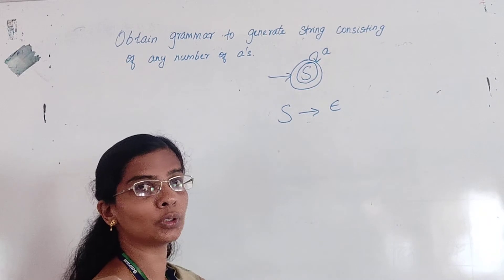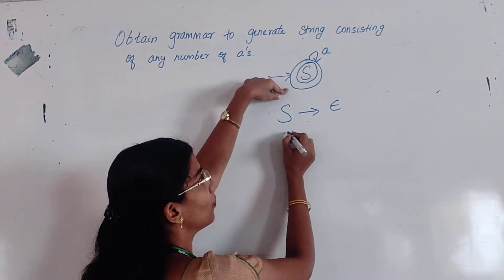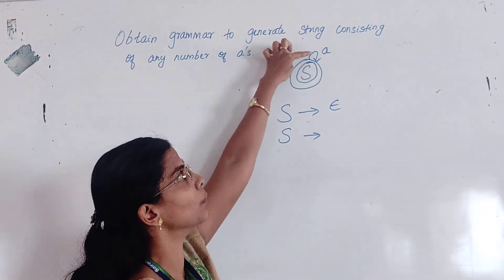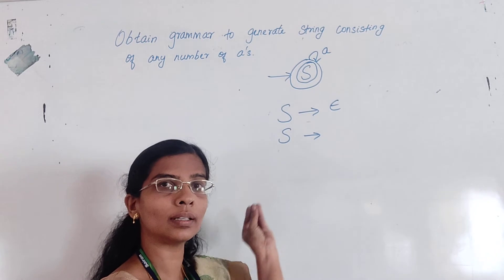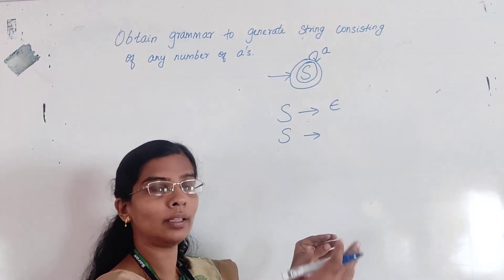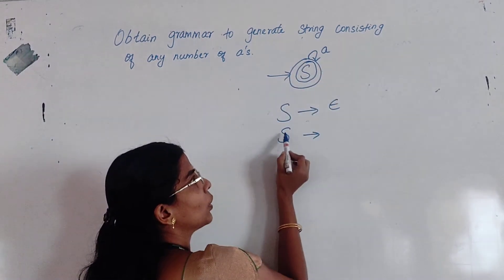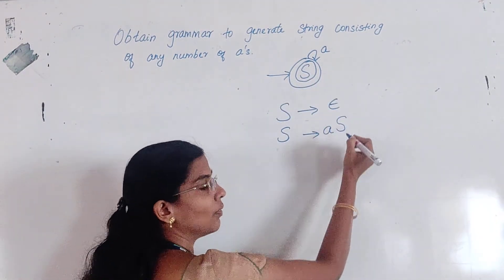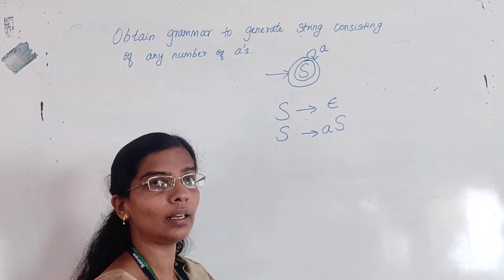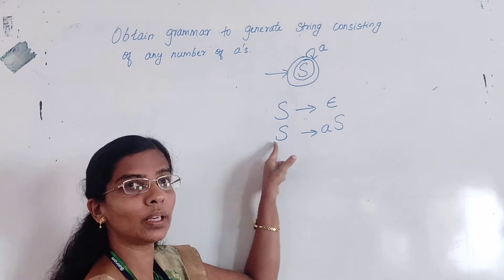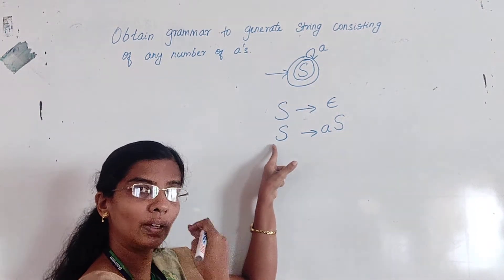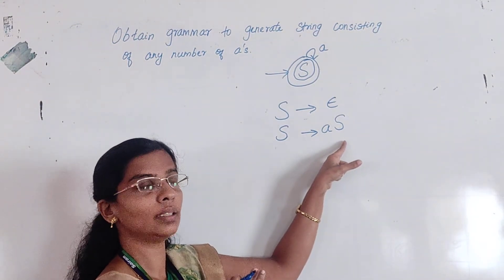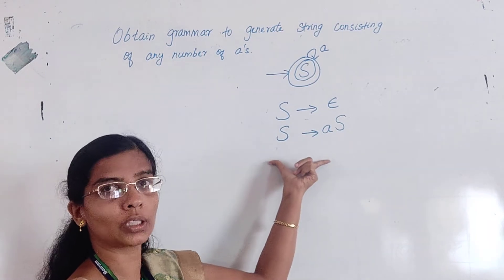Next, take the state. S is the state. To write the RHS, see the input — A is the input. Check where this input starts and where it ends. It starts from S, the input is A, and it ends at S. Since I have only one state, I have only two productions.